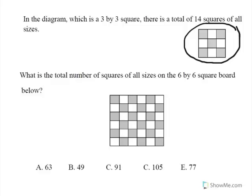And they're asking us what's the total number of squares of all sizes on the 6 by 6 square board shown below. And we're given five answers to choose from.